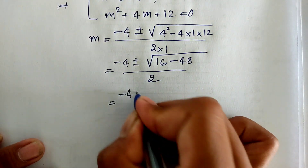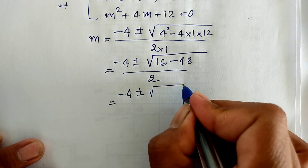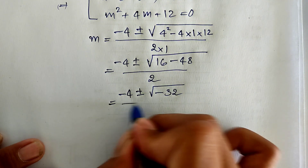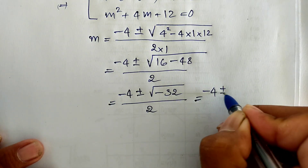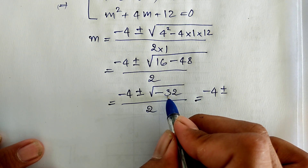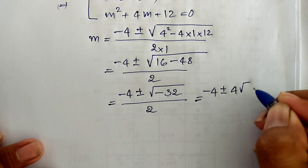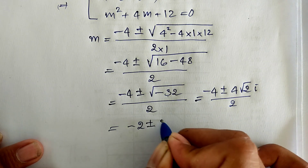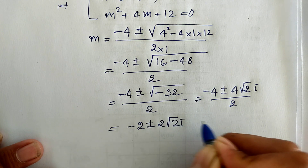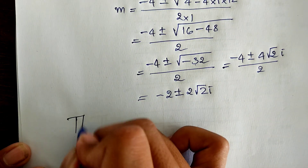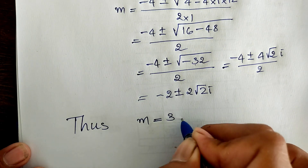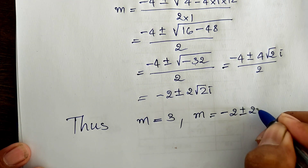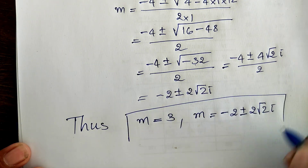We get minus 4 plus or minus square root of minus 32, divided by 2, which equals minus 4 plus or minus 4 square root of 2i, divided by 2, giving minus 2 plus or minus 2 square root of 2i. So our solutions are m equals 3 and m equals minus 2 plus or minus 2 square root of 2i.